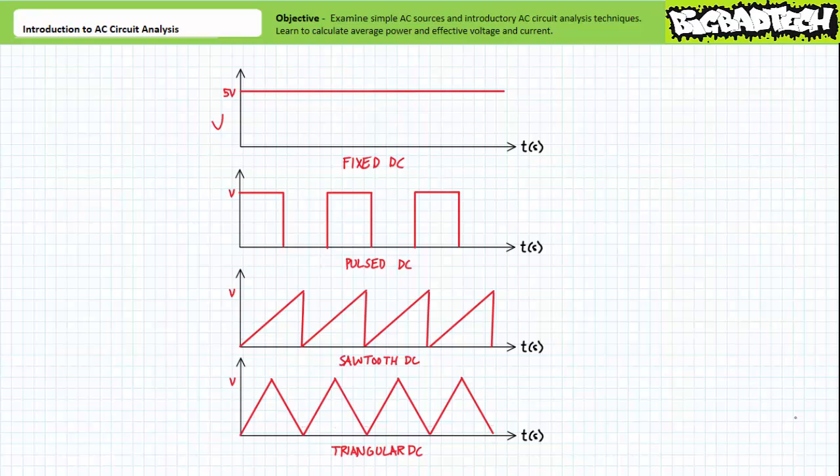The key to identifying these types of time-variant DC sources is that though their magnitude may change as a function of time, they never swap polarity and are always on one side of an axis when plotted as a function of time. Given polarity is fixed, current may change in value, but it would flow in one direction only.